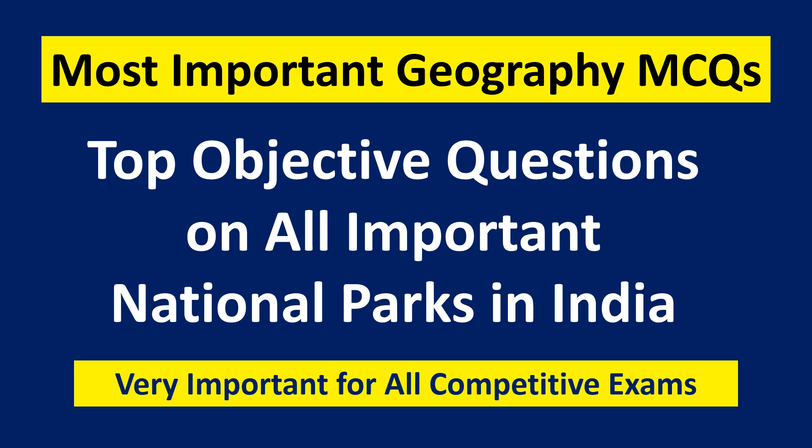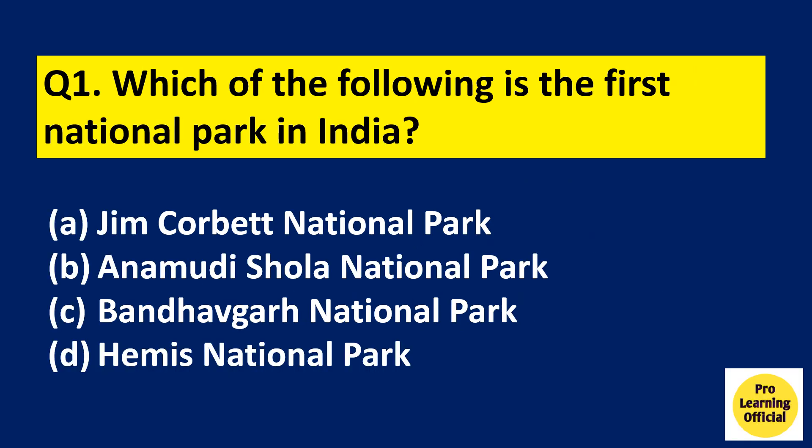Let's start with the first question. Which of the following is the first national park in India? Option A: Jim Corbett National Park. Option B: Anamudi Shola National Park. Option C: Bandhavgarh National Park. Option D: Hamis National Park. The right answer is Option A, Jim Corbett National Park, which was established in 1936 as Hailey National Park.